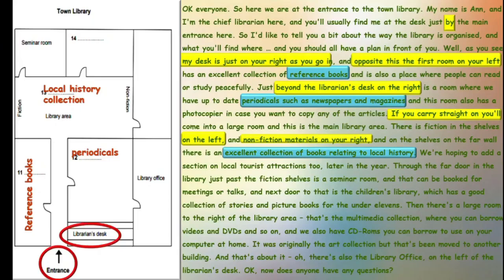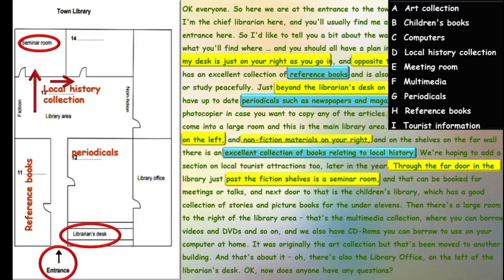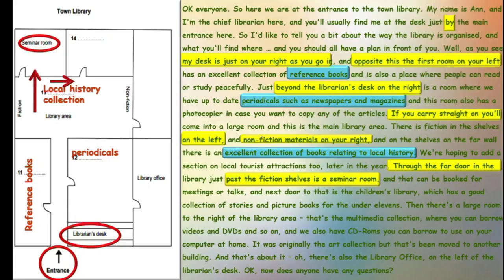Moving further: 'We are hoping to add a section on local tourist attractions later in the year.' Continuing the tour of the library, just past the fiction shelves is a seminar room, and the next stop is the children's library. We can relate it to option B — children's books — because the tape script says it 'has a good collection of stories and picture books for the under-11s.' So children's books is the answer for question 14. We have to solve four questions, and it is just about your concentration.